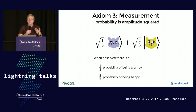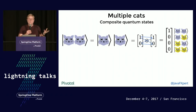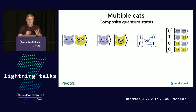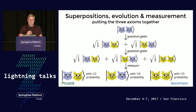Axiom three is measurement. There's a probability that the cat's going to be grumpy or happy when measured. When we have root of one-third grumpy and root of two-thirds happy, the probability is the square of those amplitudes — so one-third and two-thirds. We could also have two cats or many cats, and that's a composite quantum state. To represent composite quantum states, you take the vectors that represent the individual quantum states and do a tensor multiplication. Because we have a two-state cat, we end up with four states. Putting it all together: superpositions, quantum gates, then probability of measuring different states.